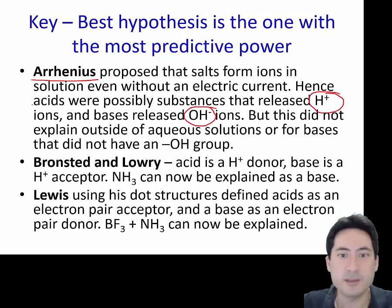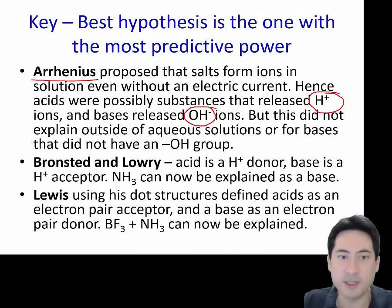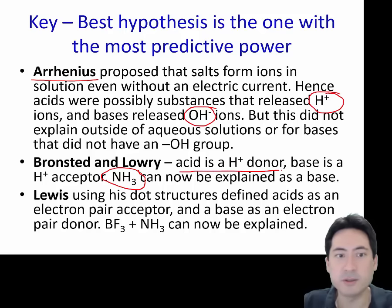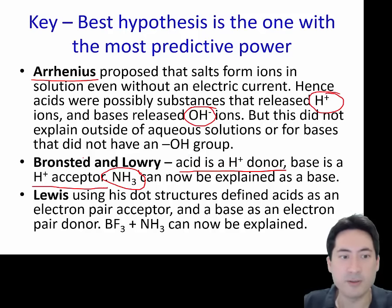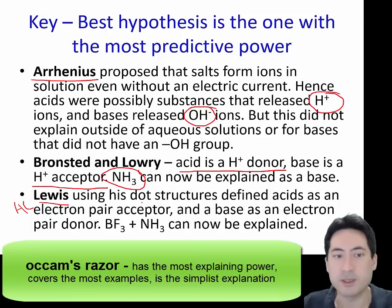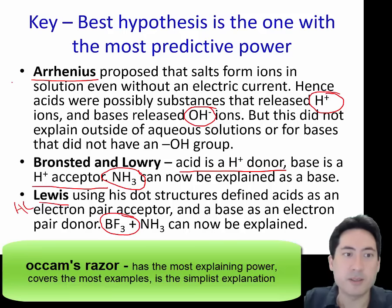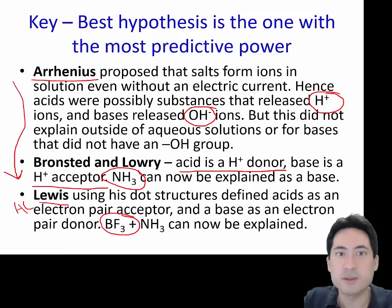Bronsted-Lowry is an improvement to this, because his method is just as simply used and simply explained, but can now include various other acids and bases — most notably ammonia. If you call it a proton donor or a proton acceptor, that includes a much wider variety of acids and bases. Finally, for higher level only, we get to Lewis, which is the most powerful, working down to an electron pair acceptor or electron pair donor — including exceptions like boron trifluoride. This shows a progression based on Occam's razor: the simplest with the most predictive power.